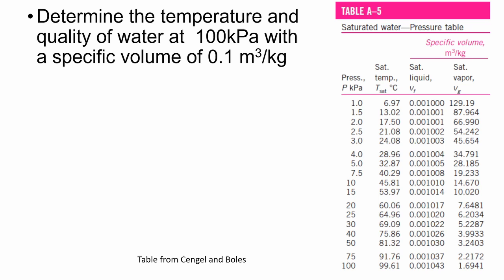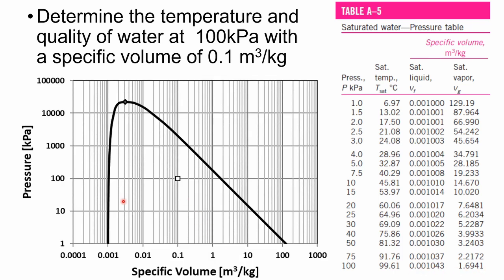First, we need to determine the phase. Looking at the saturated water pressure table for 100 kPa, we see that the specific volume given falls between the saturated liquid and saturated vapor values, meaning that we have a two-phase mixture. This can also be shown graphically, where at 100 kPa and 0.1 cubic meters per kilogram, it falls inside the dome, showing visually that it is in fact a two-phase mixture.